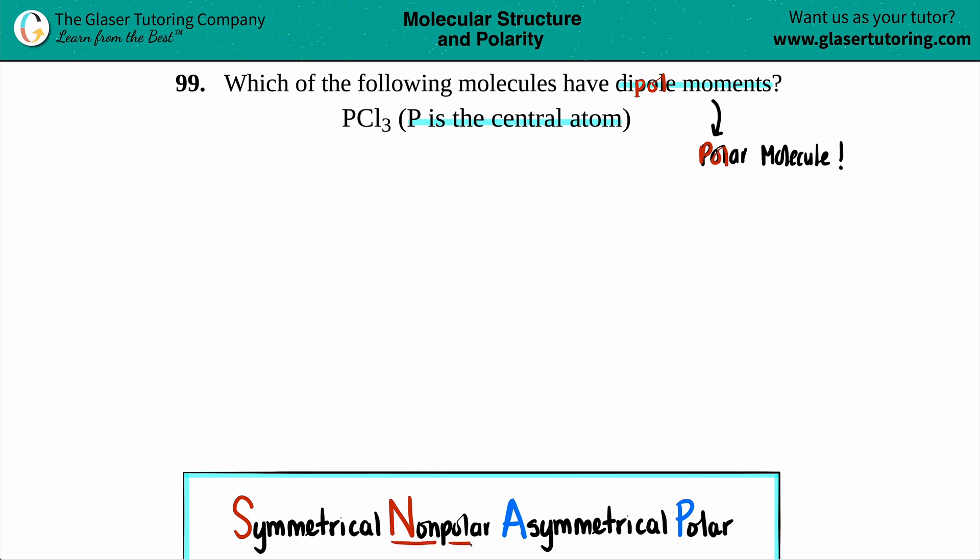If you're non-polar, you do not have a dipole moment. Now, a dipole moment for polar molecules means that there's an unequal distribution of electrons in the whole entire molecule. In this case, it would be PCl3.